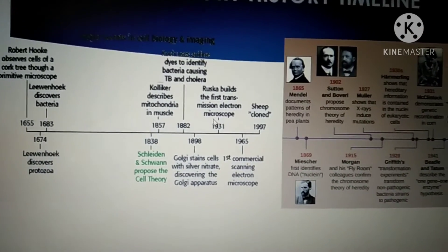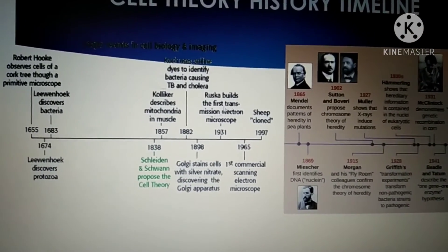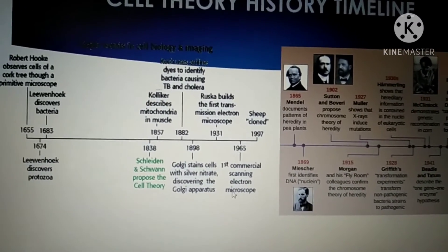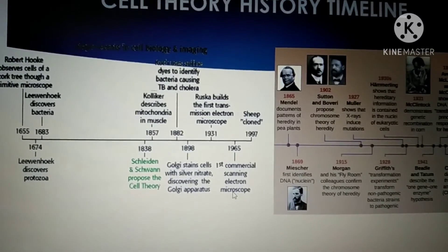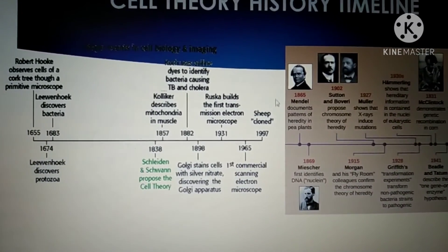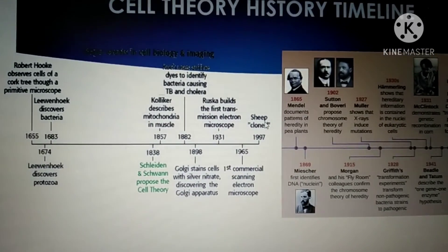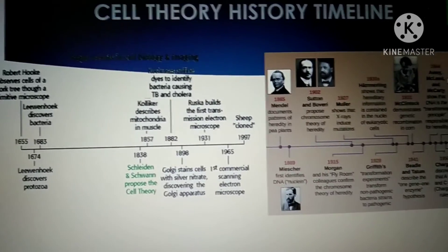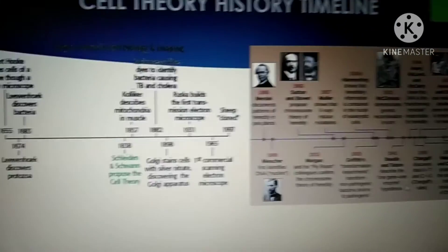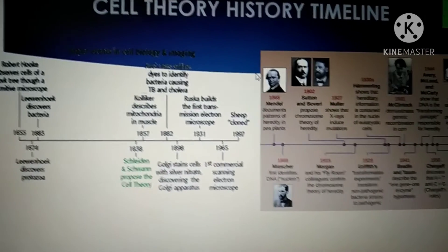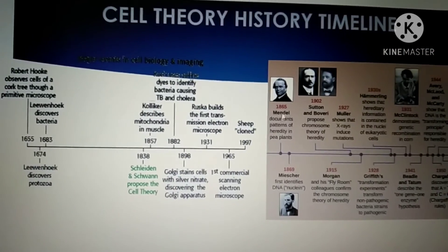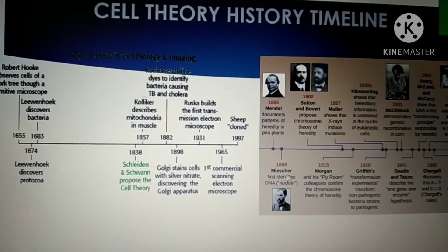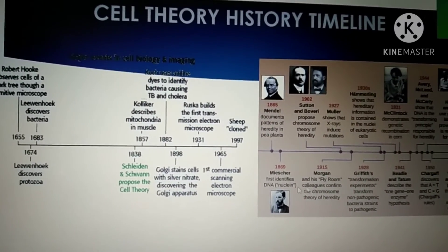In 1931, Ruska built the first transmission electron microscope. In 1965, the first commercial scanning electron microscope was developed, which aided discoveries about the endomembrane system. In 1866, Mendel documented patterns of heredity in pea plants. In 1869, Miescher first identified DNA, calling it nuclein.